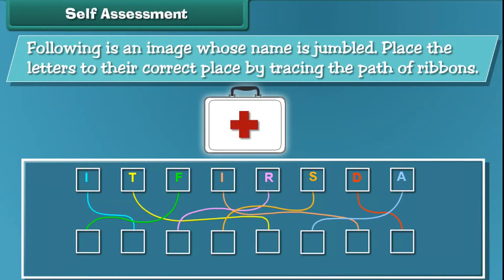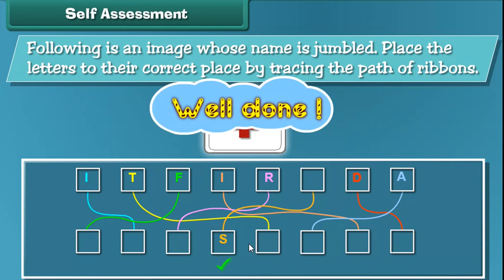Self-assessment. Following is an image whose name is jumbled. Place the letters in their correct place by tracing the path of ribbons. Well done!